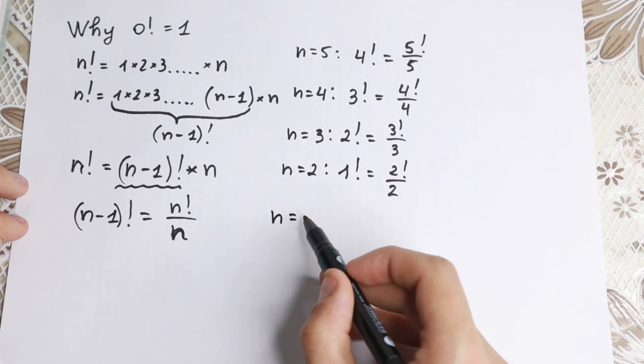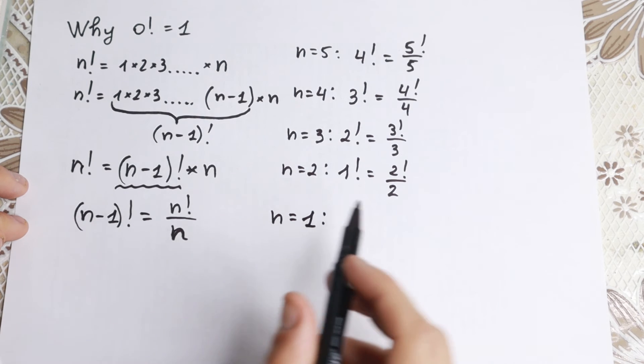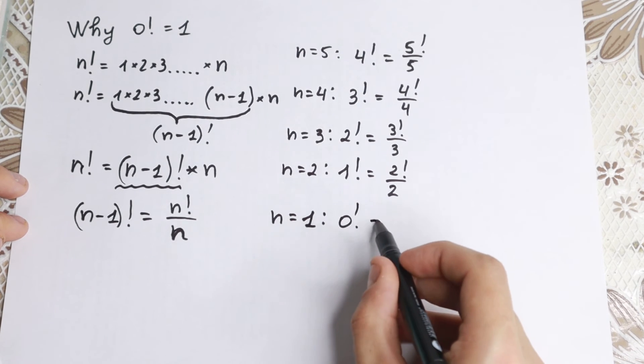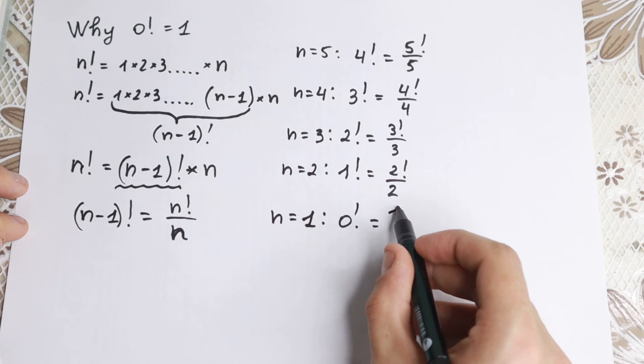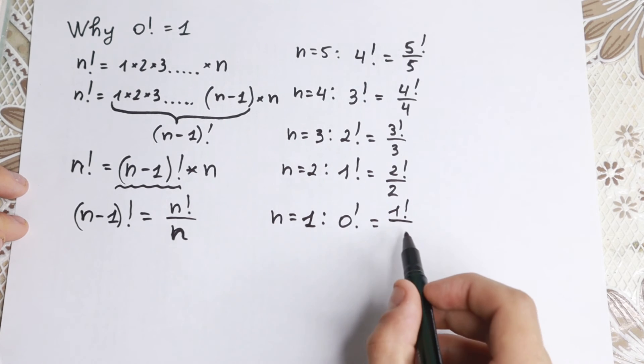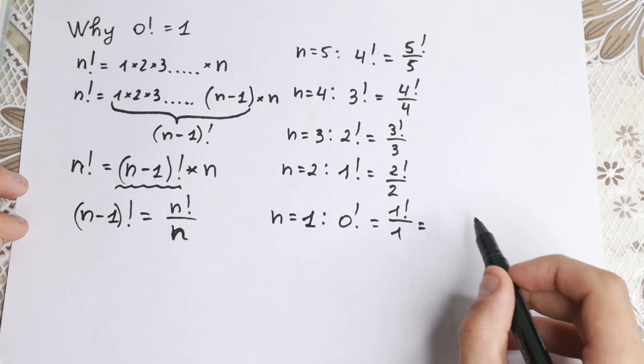If n equal to 1, what we have as a result? 1 minus 1, 0 factorial, our case, equal to n factorial, 1 factorial over 1. And finally 1 factorial over 1, it is equal to 1.